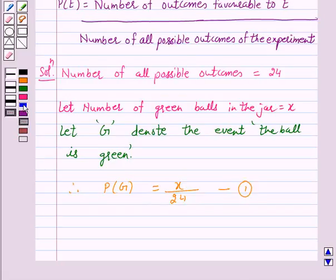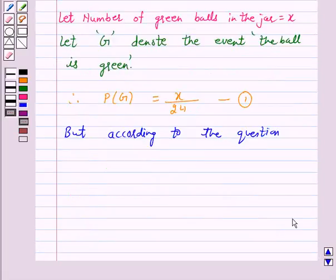But according to the question, P(G), that is the probability of a green ball, is equal to 2 upon 3. Let us take this as number 2.